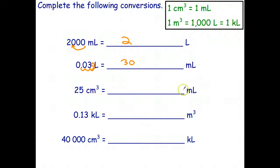Cubic centimeters to milliliters - that's the easiest conversion in the entire universe. Same number, just change the units. Kiloliters to cubic meters - that's the second easiest conversion. Once again, just change the units. One kiloliter is one cubic meter, so 0.13.